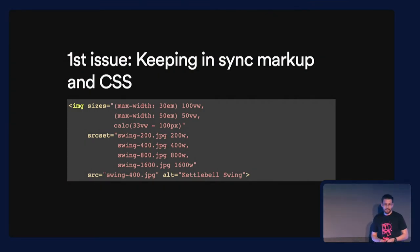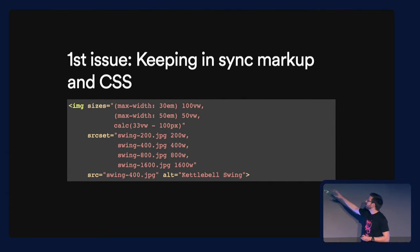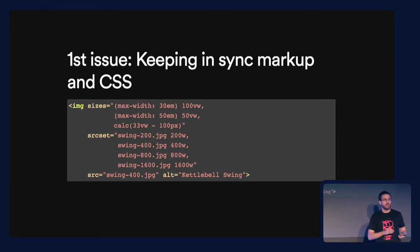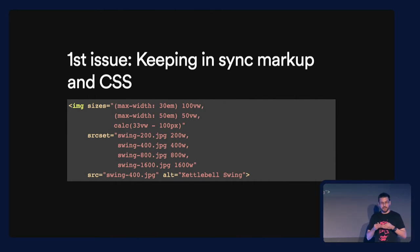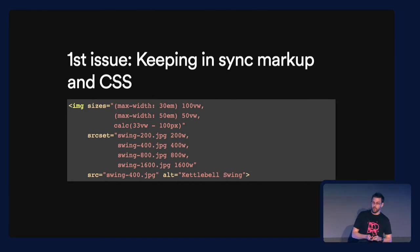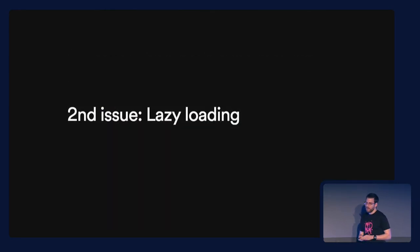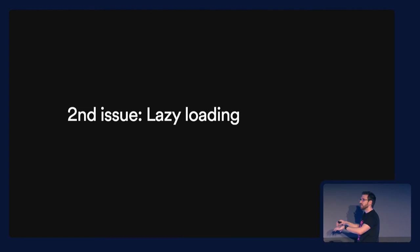First issue is the markup — it can become a bit messy. The sizes attribute being a list of breakpoints means your breakpoints live both in the HTML and the CSS. So unless you really keep track of all the changes and make sure they are in sync, it's very easy to make a change in CSS and forget about the HTML. The browser needs this information because it won't wait until the CSS is loaded before deciding what image to request.